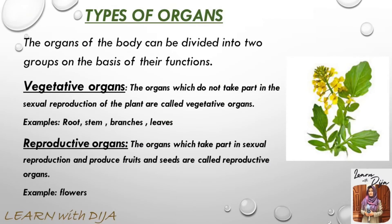On the basis of function, mustard plants are divided into two groups: vegetative organs and reproductive organs. Vegetative organs do not take part in reproduction — these include root, stem, branches, and leaves. Reproductive organs are involved in reproduction and seed production, such as flowers.